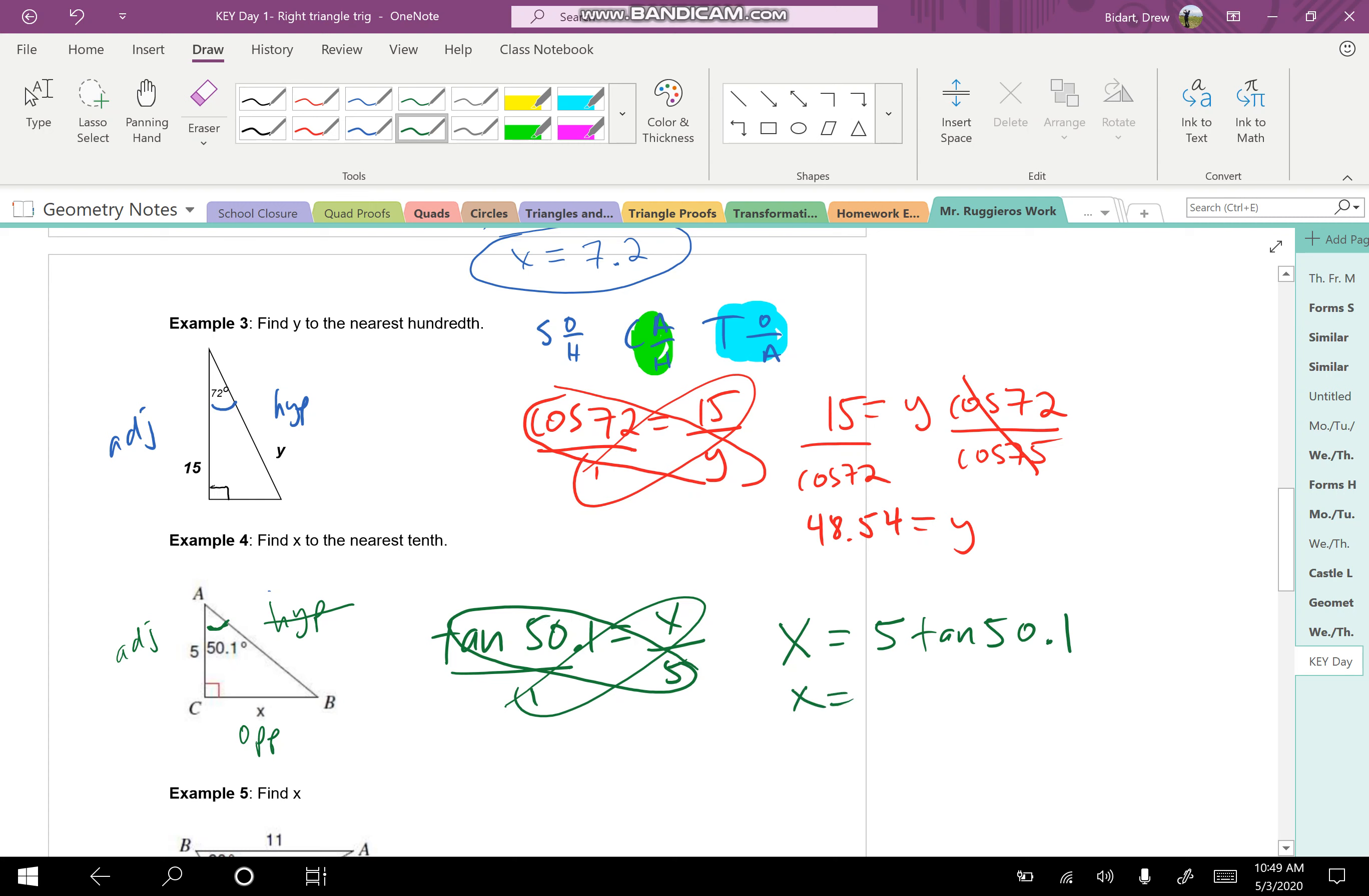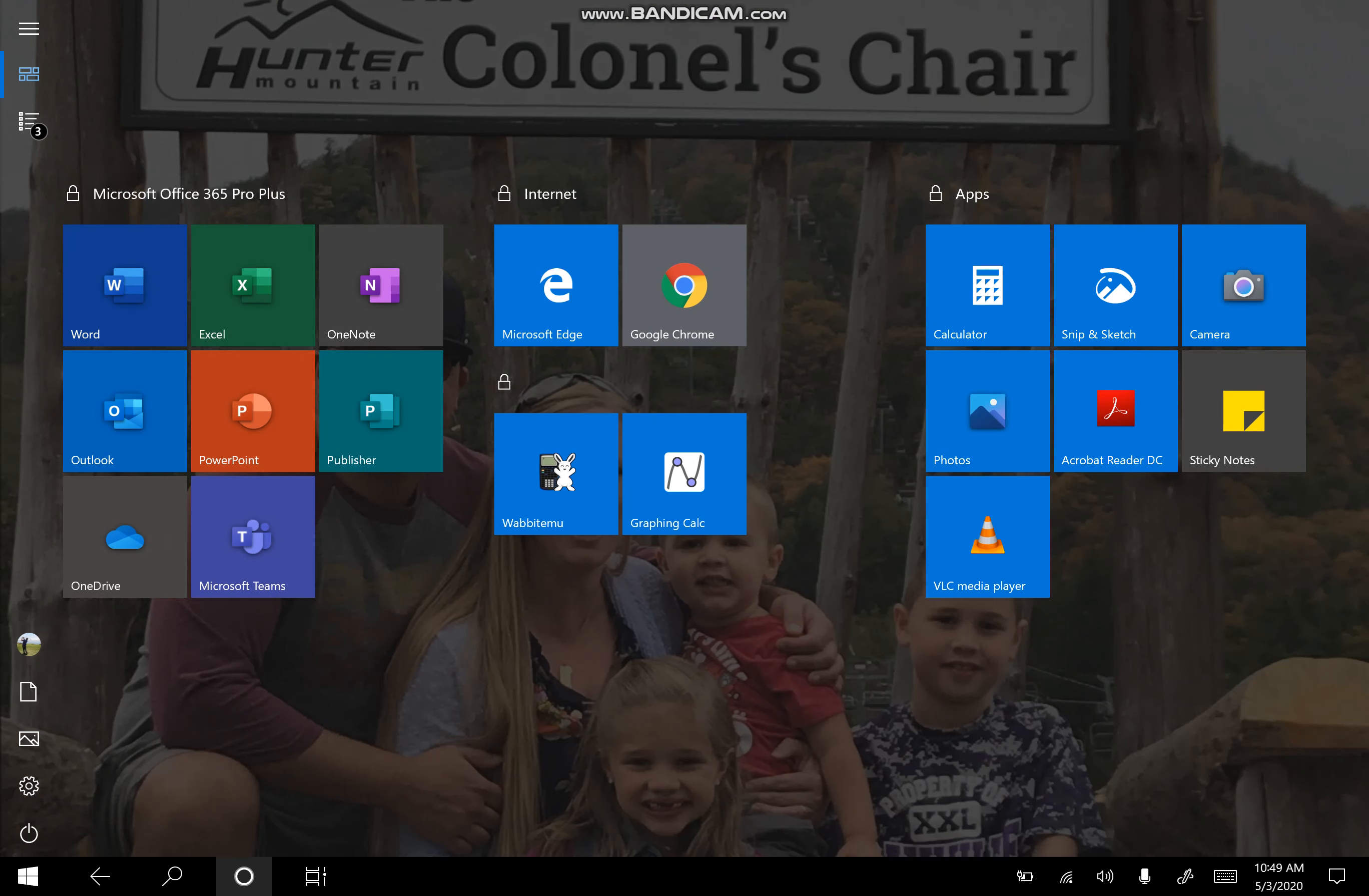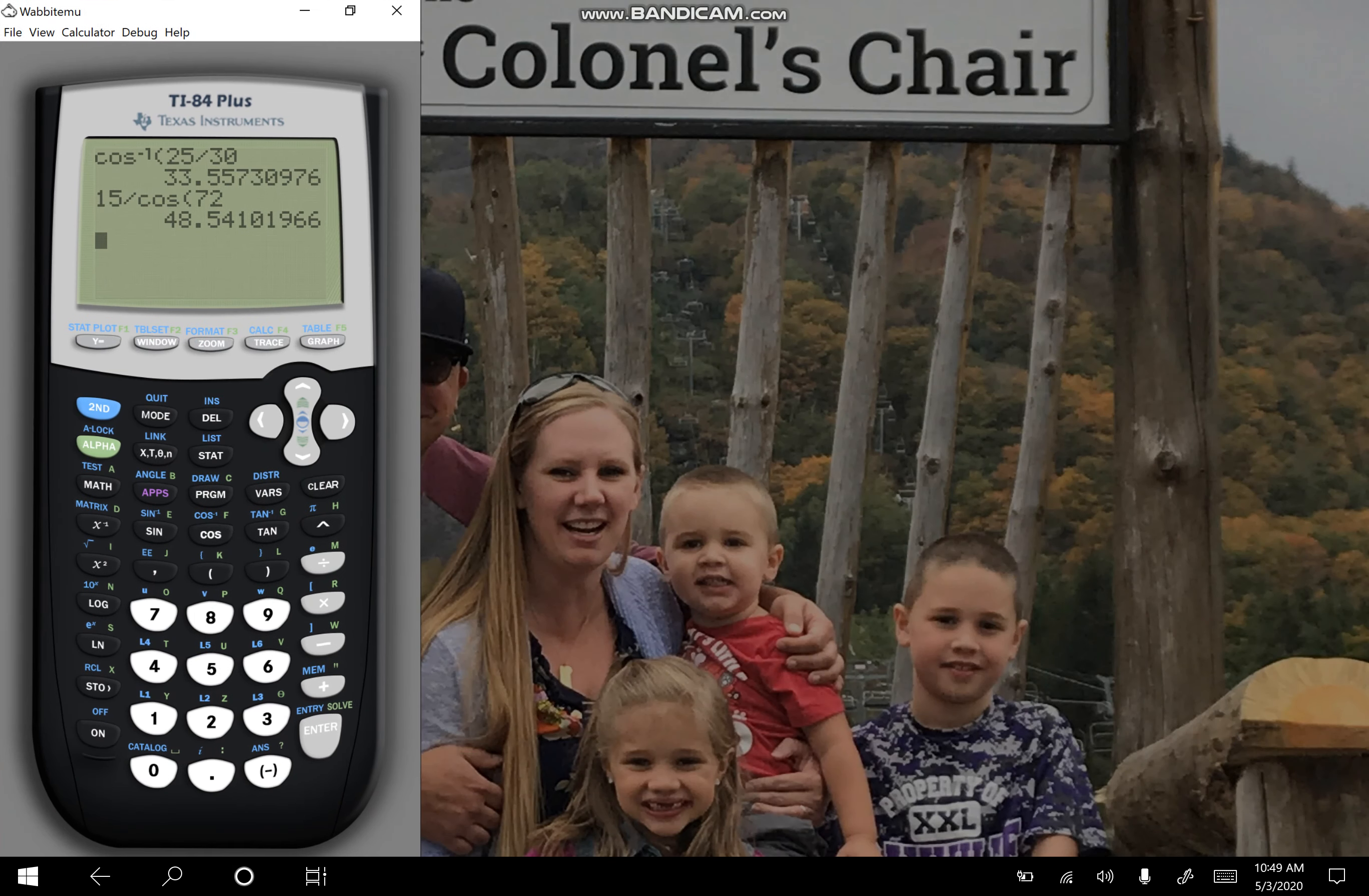Put that as a constant in front, 5 tan of 50.1. And what makes it easier is, in a way, I can just go to my calculator and type that in in one step. So I go to my calculator. It's going to be 5 tan 50.1. I'm going to hit enter.